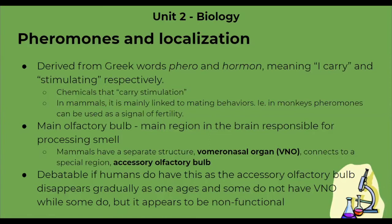In mammals, we have a separate structure called the vomeronasal organ, or VNO, that connects to a special region called the accessory olfactory bulb. It is debatable whether humans actually have the accessory olfactory bulb, as it disappears gradually as we age.